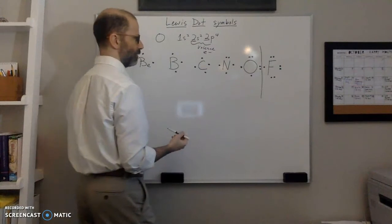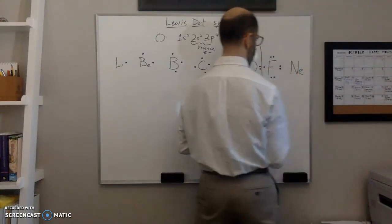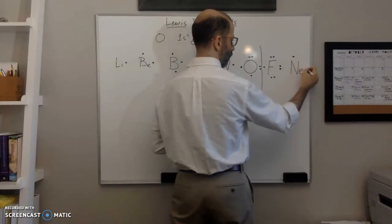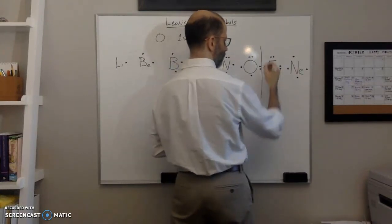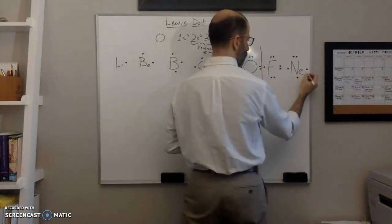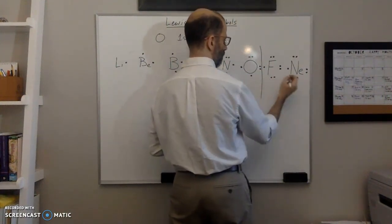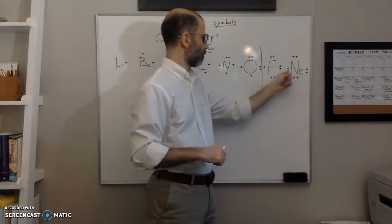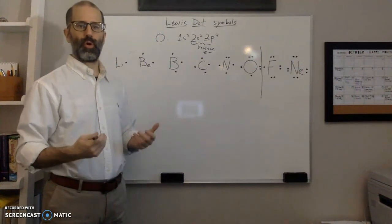Finally, neon has eight valence electrons. Going around: one on top, one on the right, one on the bottom, one on the left — then pairing up each side going around again. The eighth electron completes the square, giving four pairs of electrons for neon. That's how you draw Lewis dot structures for all main group elements — know the group, know the valence electrons, and draw the symbol.